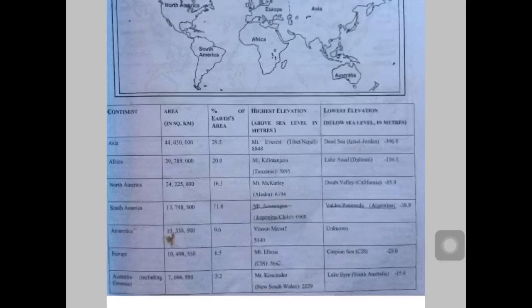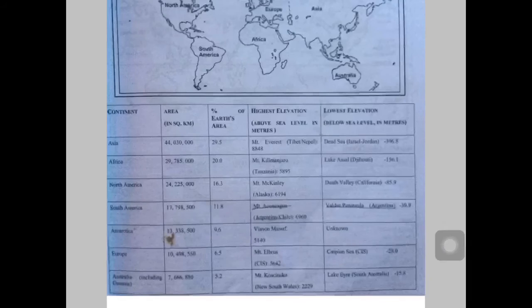In Antarctica, the highest elevation point is Vinson Massif, while the lowest elevation point is unknown. Then comes Europe: Mont Blanc in the Alps is the highest elevation point, while the Caspian Sea is the lowest.